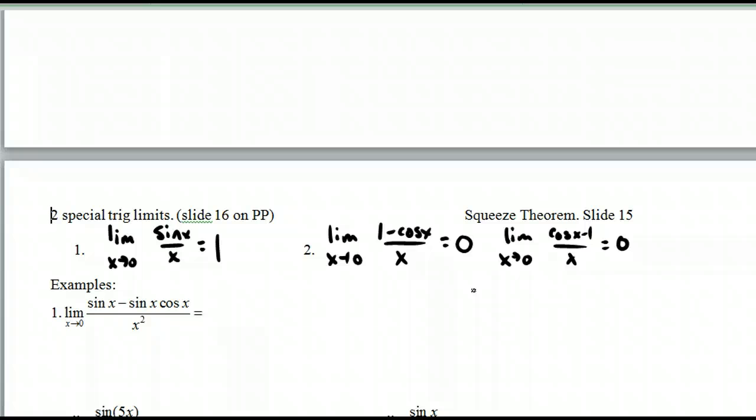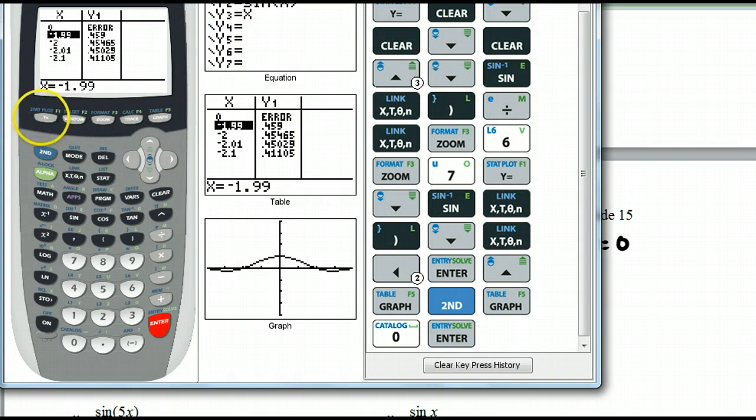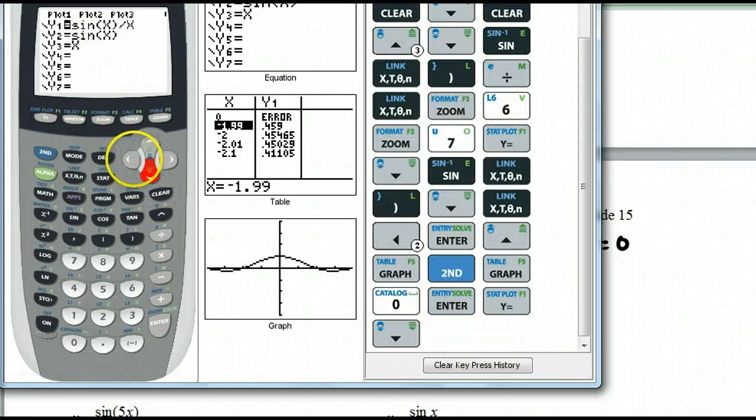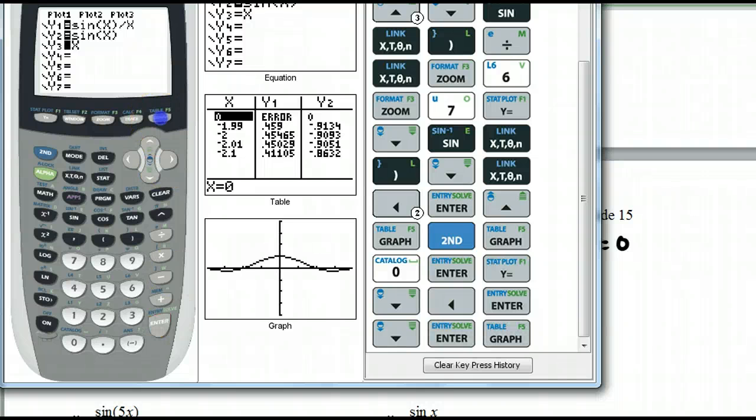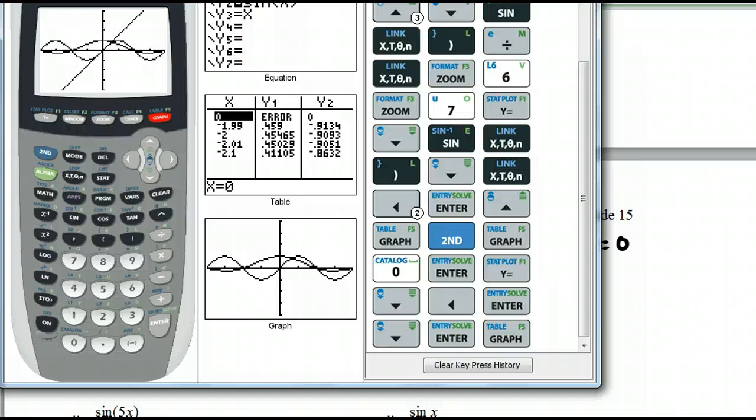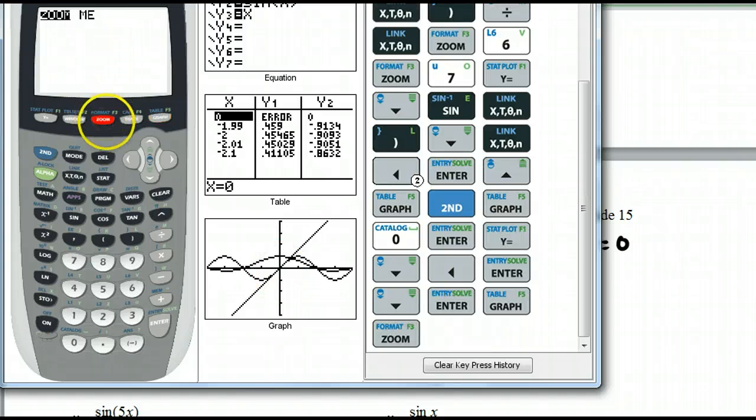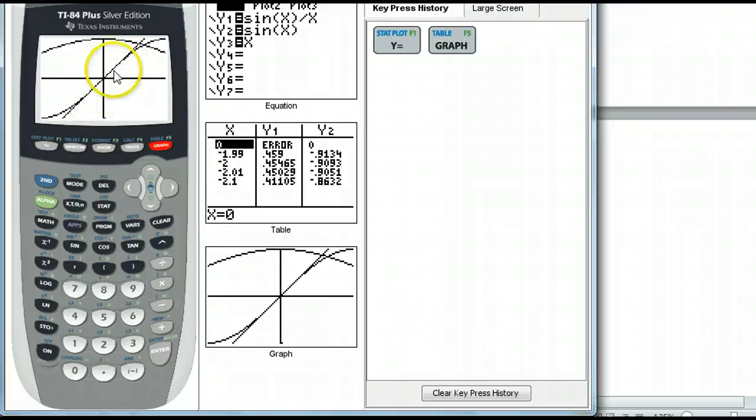You can prove this one with the squeeze theorem, and they show it in the book. I think the best way to see it is with the calculator, though. If I graph both sine of x and x, when we zoom in here, both of these curves look almost identical. And, when they get closer and closer to zero, we can keep on zooming. They will look identical.